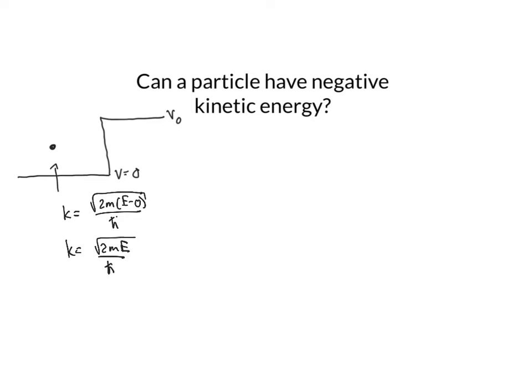Now classically, if this particle had an energy that is less than the potential energy V₀, then when it travels over here to this barrier,